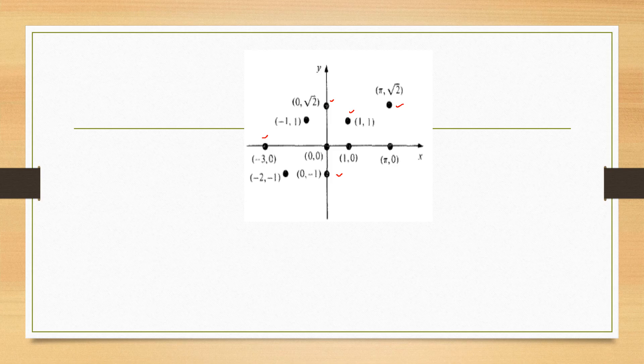This is the origin and it has coordinates zero, zero. While if you remain on the x-axis, your y-coordinate will always be zero. And on the other hand, if your point is on the y-axis, your x-coordinate is always zero, just like these two points.